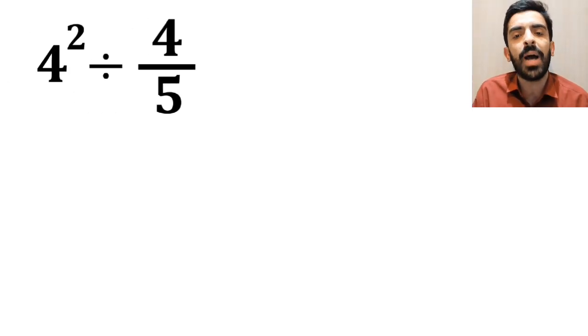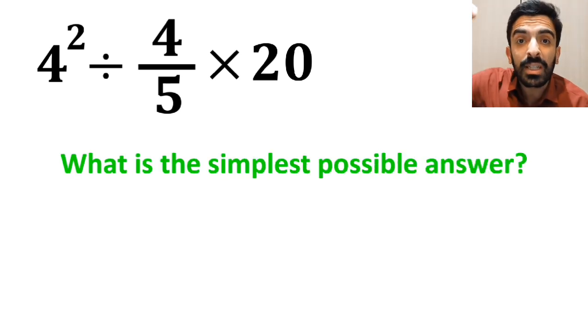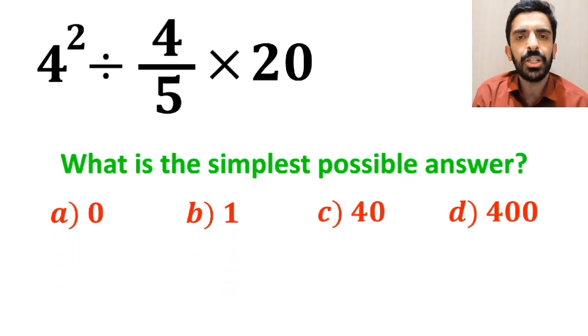If we have the expression 4 to the power of 2 divided by 4 over 5 then times 20, what is the simplest possible answer for this expression? Which option do you think is the correct answer to this question?